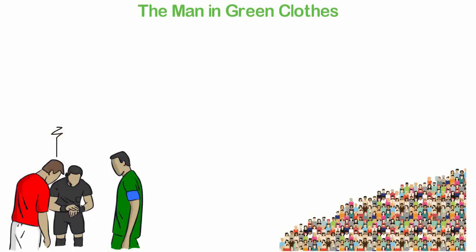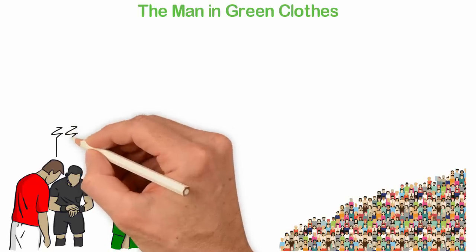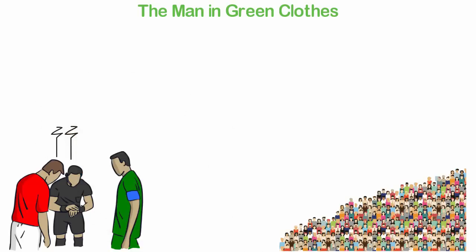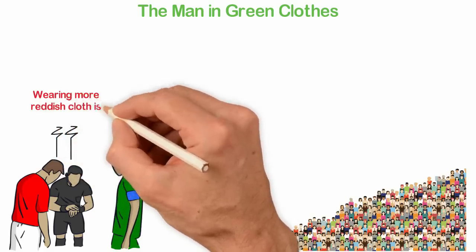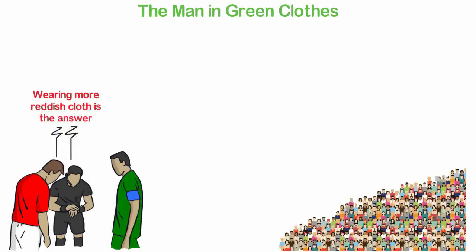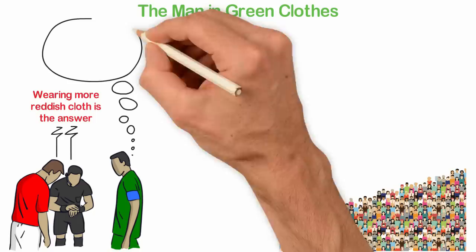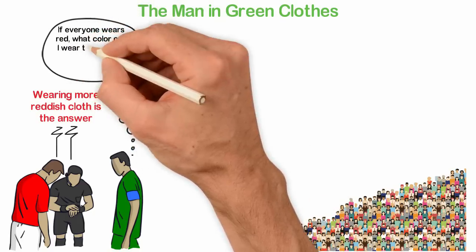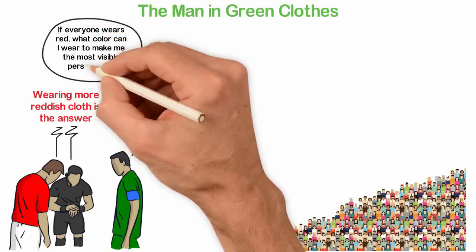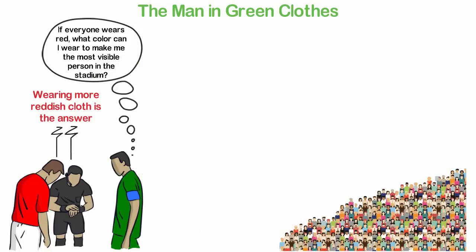Then two of these people think to themselves, if everyone wears red clothes and we want to be noticed, can we simply go to some cloth makers and ask them to make us more reddish clothes? They both thought that's a great idea and they did just that. The third guy thought to himself, if everyone wears red, what color can I wear to make me the most visible person in the stadium? He got an idea.